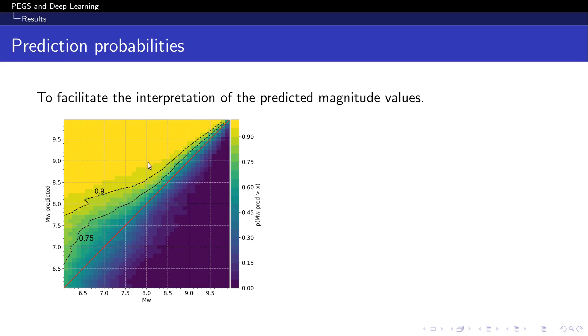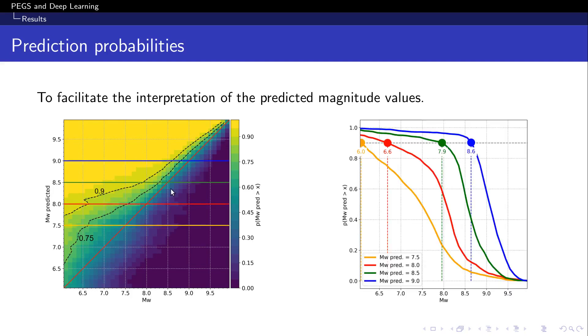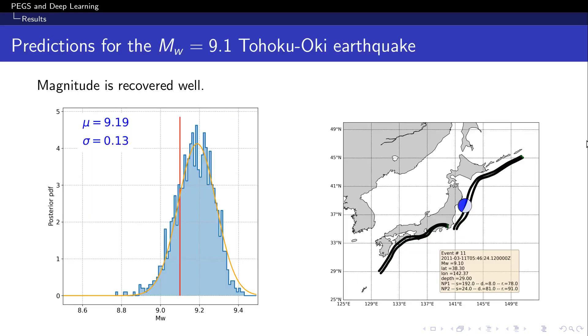So, to better illustrate this concept, we can cut the image in horizontal slices, as it's done here, and fix a value of probability for which we would be willing to take action in the context of early warning, let's say 90%. The figure on the right here, then, shows this for four different predicted magnitude values, 7.5, 8, 8.5, and 9. And for each of the predicted values, we can read on the x-axis what is the minimum magnitude to be expected with a probability of 90%. So, if the algorithm predicts 8.5, these values correspond to 7.9.